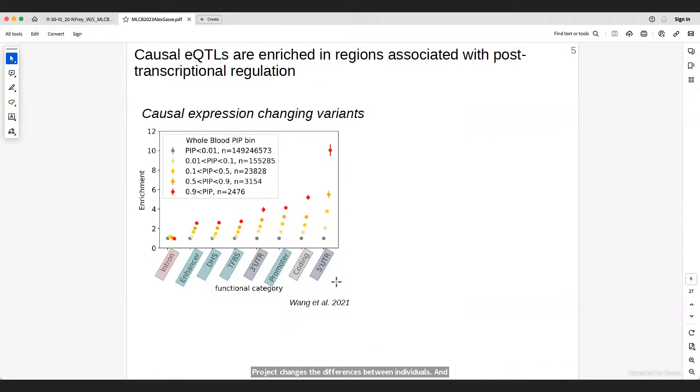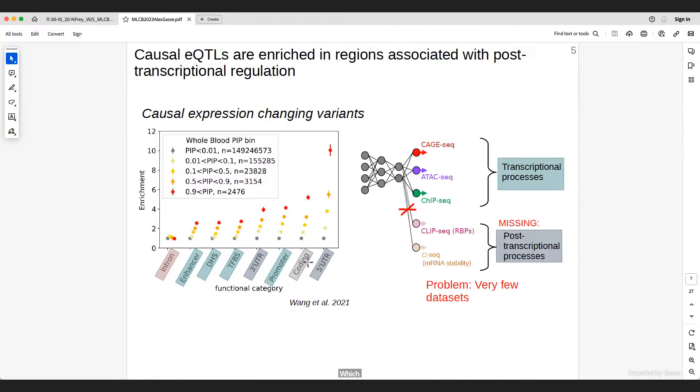And so, one of the reasons we think that the model isn't able to predict these differences is that it doesn't know anything about post-transcriptional regulation. So, the Enformer and also most of the other models are trained on large data sets that are mostly covering transcriptional processes. But as the study here on the left suggests, we can see enrichment of causal variants not only in regions that are associated with transcriptional processes, but also especially in regions that are associated with post-transcriptional processes, such as, for example, the 5-prime UTR, the 3-prime UTR, or even the coding region. And so, while these data sets exist, for example, CLIP-seq for the location of RNA binding protein binding or other sequencing techniques for measuring mRNA stability, there are very few of those compared to other types of data sets. And also, when they exist, it's often just in a single cell type.